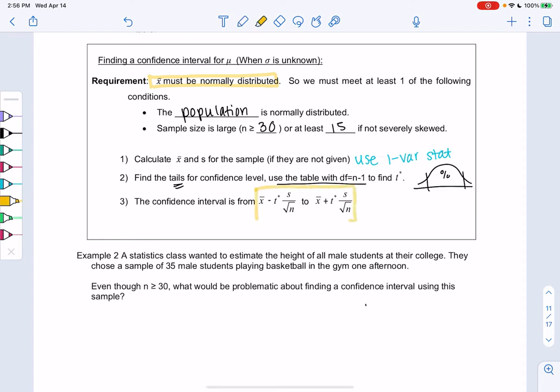It'll be the mean, x-bar, plus or minus. So that's my two endpoints. The T-score times S over square root of N.